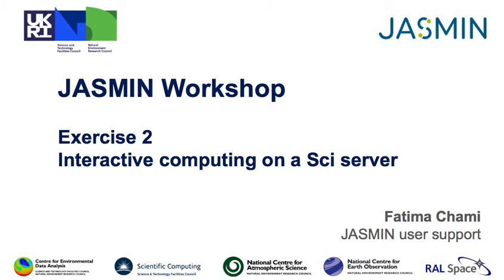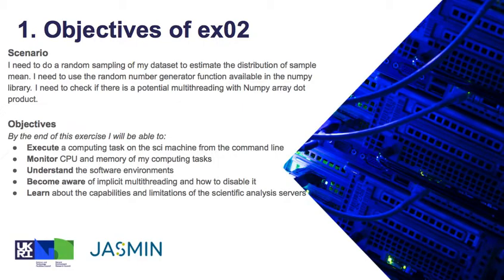In this Jasmine workshop exercise we'll be looking at interactive computing on a size server. The scenario is this: I need to do some random sampling of my data set to estimate the distribution of sample mean. I will need to use the random number generation function from the NumPy library and also want to check if the NumPy array dot has any multi-threading before implementing it in my code.